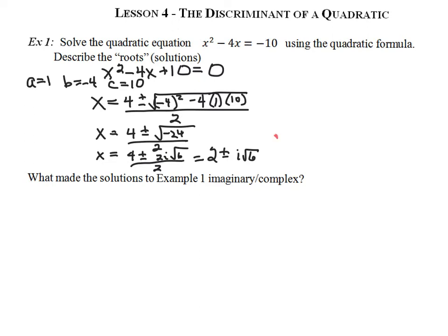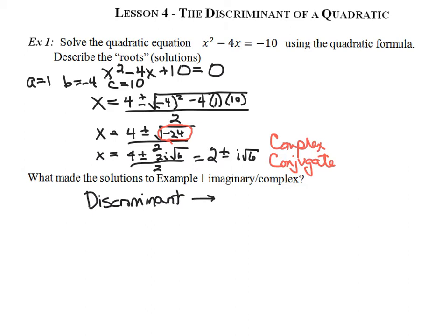These solutions are complex — they have the imaginary i in them. In fact, these would be complex conjugate solutions. What made the solution to example 1 be imaginary or complex? Clearly what told us we were going to have complex solutions was the number underneath the radical sign. That number has a special name: it's called the discriminant. The discriminant is going to be very useful to determine what we call the nature of the roots for a quadratic equation.